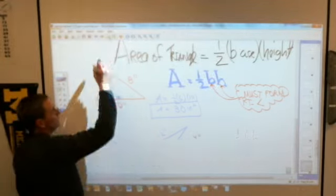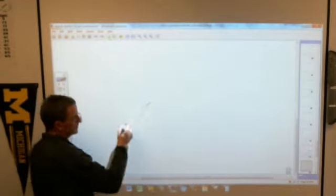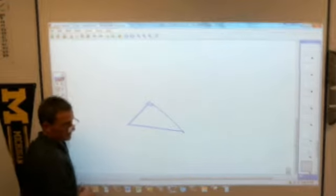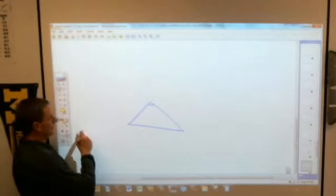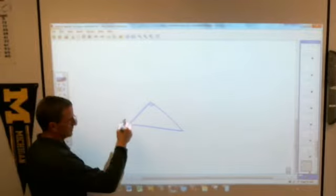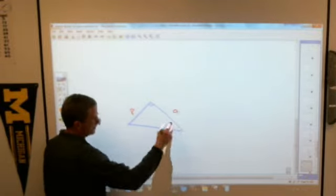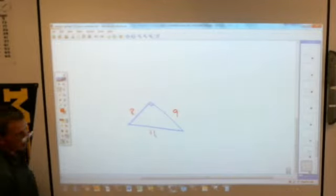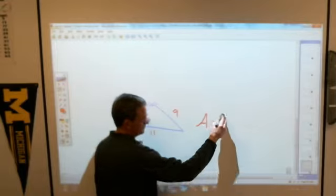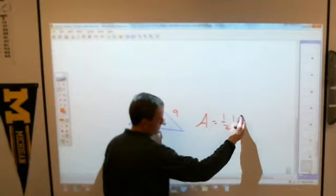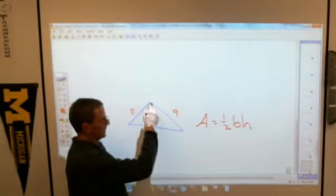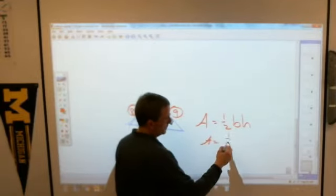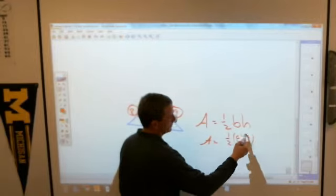Or maybe they'll have the triangle and it'll be turned like this. A lot of times when we hear the word base, we always think that's the bottom number. That's not necessarily the case. If you have a triangle that looks like this, let's say this is eight, and that's nine, and this is eleven. What two numbers am I going to put in my formula for the area of a triangle? The two that form the right angle are eight and nine. Area equals one half of eight times nine.